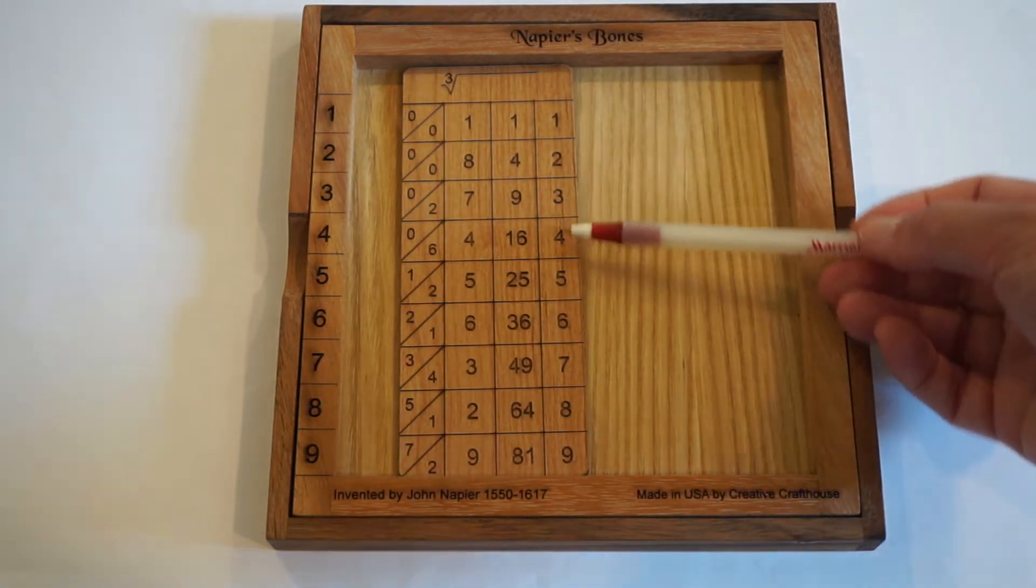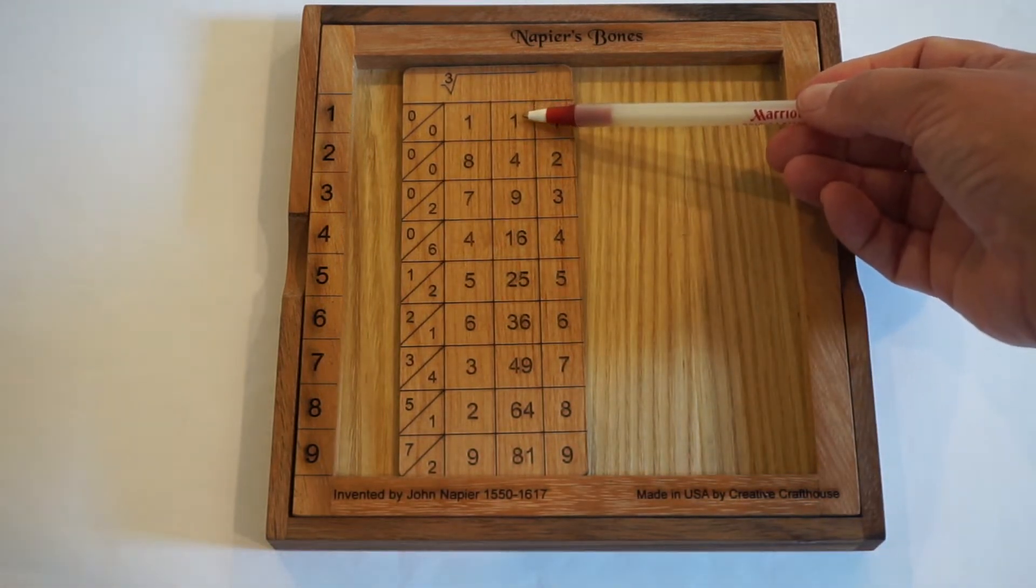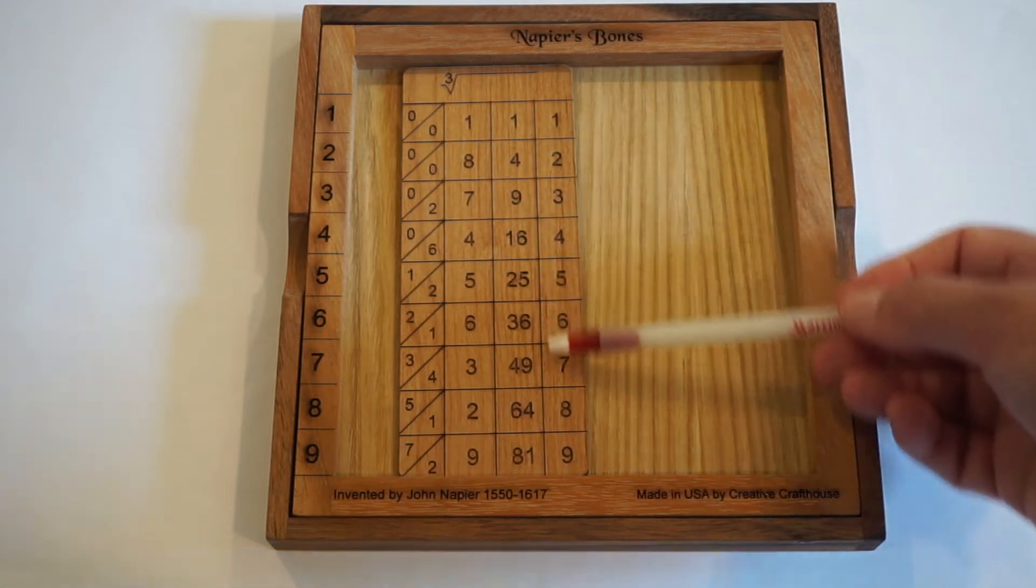On the back we have the digits 1 through 9, and on the second column to the right we have the squares. 1 squared is 1, 2 squared is 4, 3 squared is 9, etc.